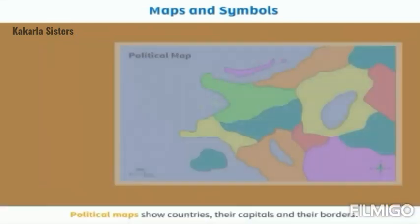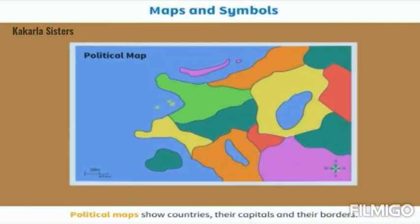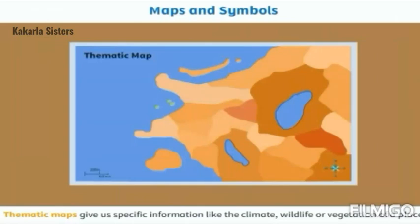Political maps show countries, their capitals and their borders. Thematic maps give us specific information like the climate, wildlife or vegetation of a place.